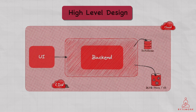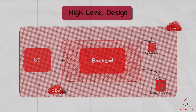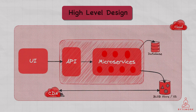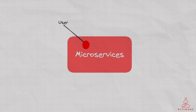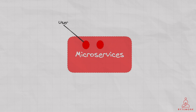Based on these requirements and our high-level design, let's talk about all the possible microservices that would work together to provide the basic desired functionality. We'll have a User microservice which is responsible for managing user-related data and actions, such as user authentication and user profile management. This microservice interacts with a user database to store and retrieve user data. For example, when a user creates an account on the video platform, the User microservice would handle account creation, including validating the user's email address and password, storing the user information in the user database, and generating a unique user ID.